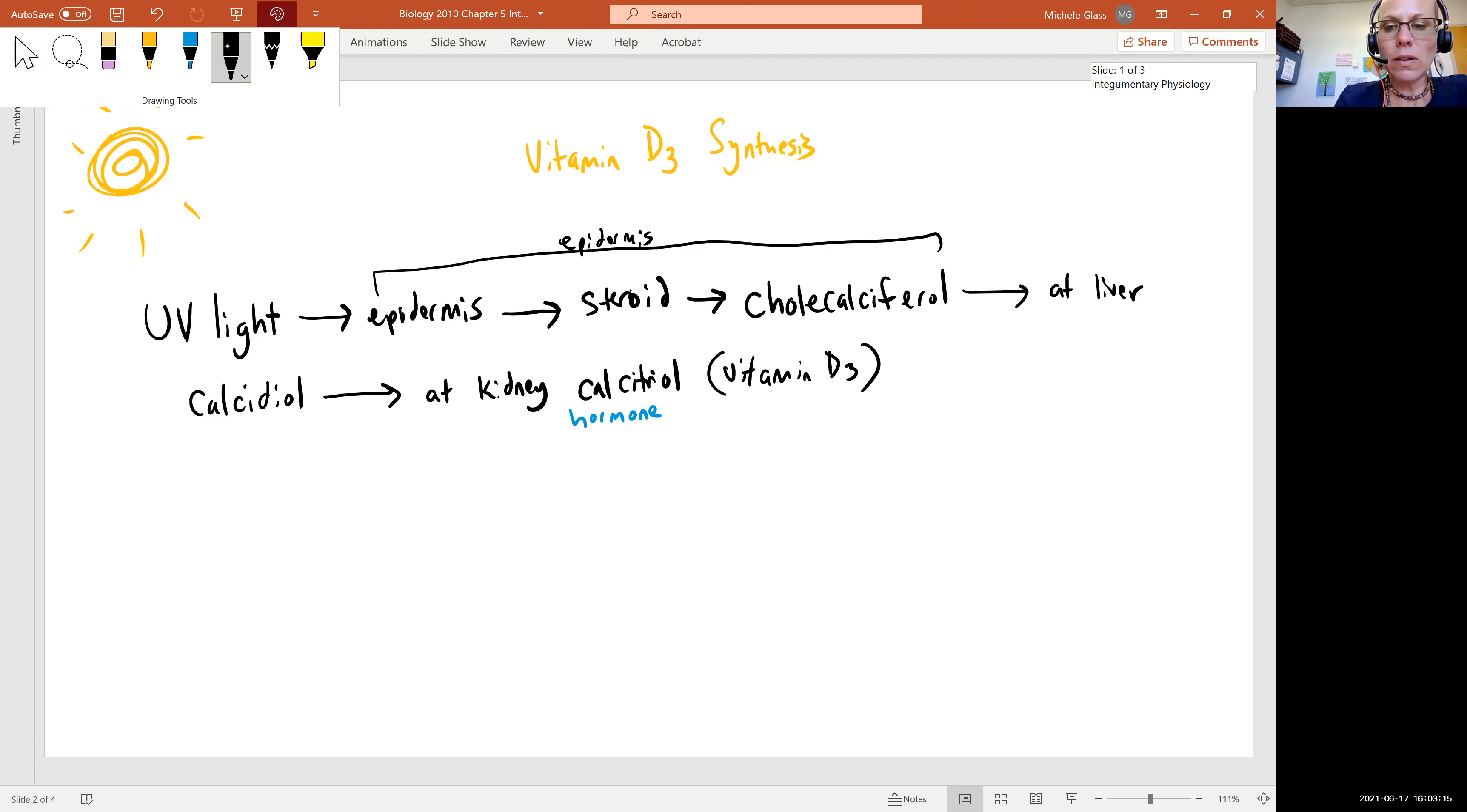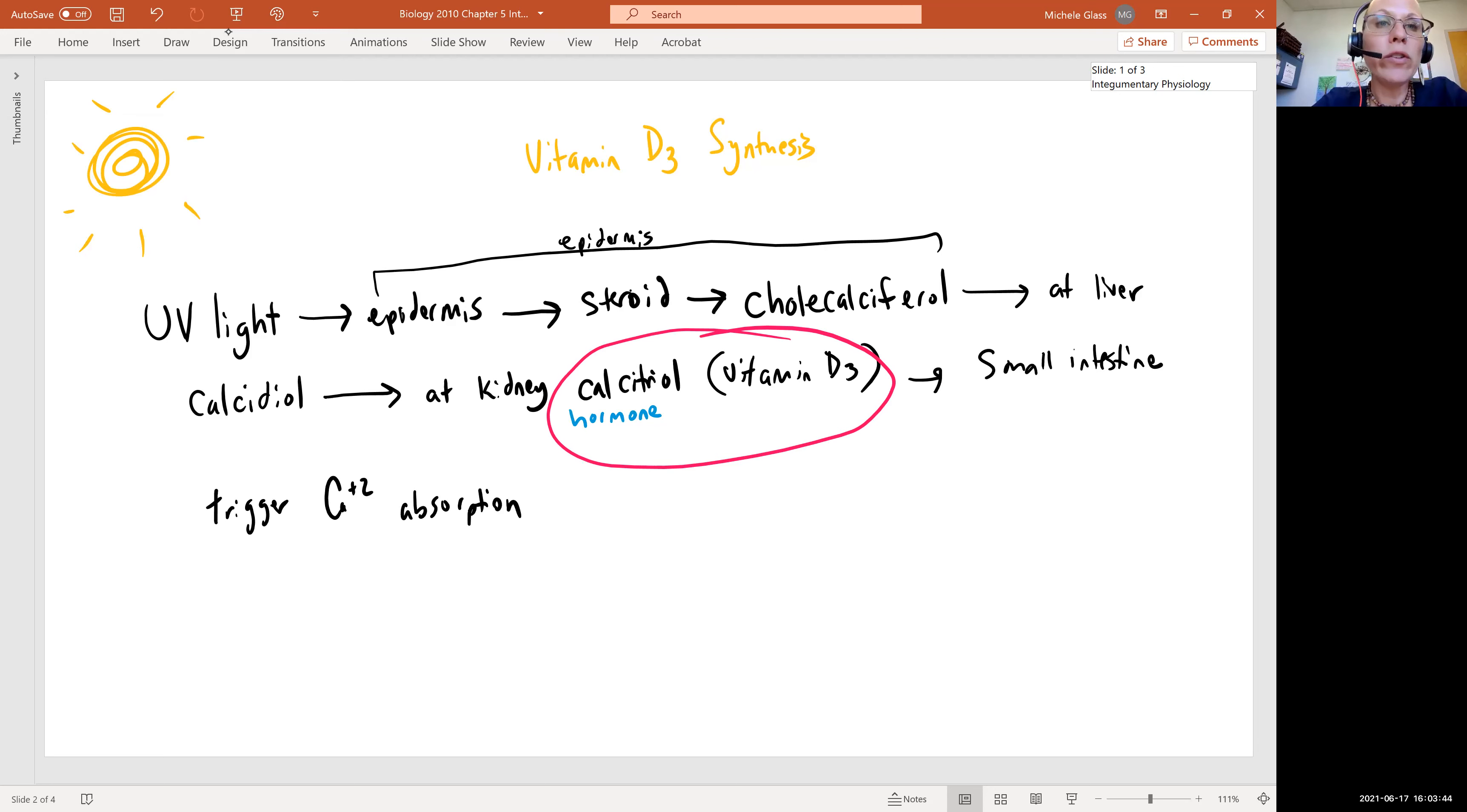The significance is that your calcitriol or your vitamin D3 is going to talk to the small intestine, and then it's going to trigger calcium absorption. So if you are not getting enough sunlight, then your body is not producing the calcitriol or vitamin D3 that you need. So you can be eating lots of calcium, but it's not going to be available in the body to become part of your bone structure.